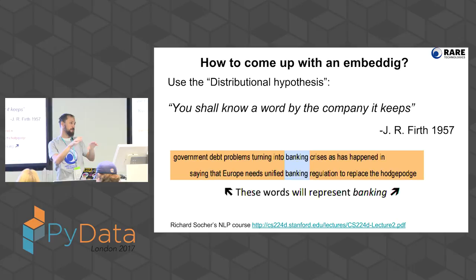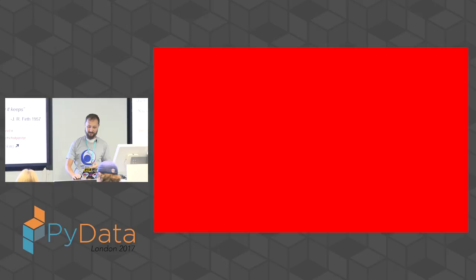This is the idea from Wittgenstein that a word is just the way you use it. The word by itself has no meaning — it's just defined by how people use it. And this is the hypothesis we're going to use to create these vectors.